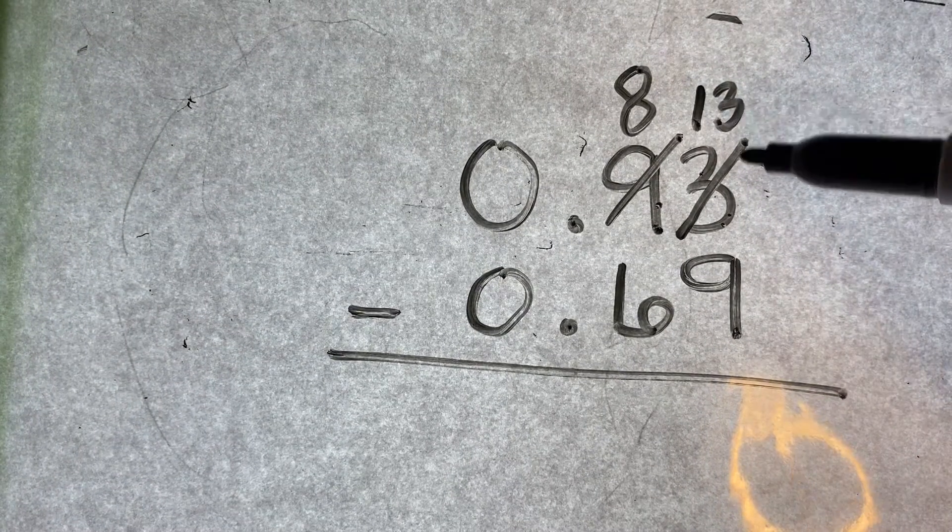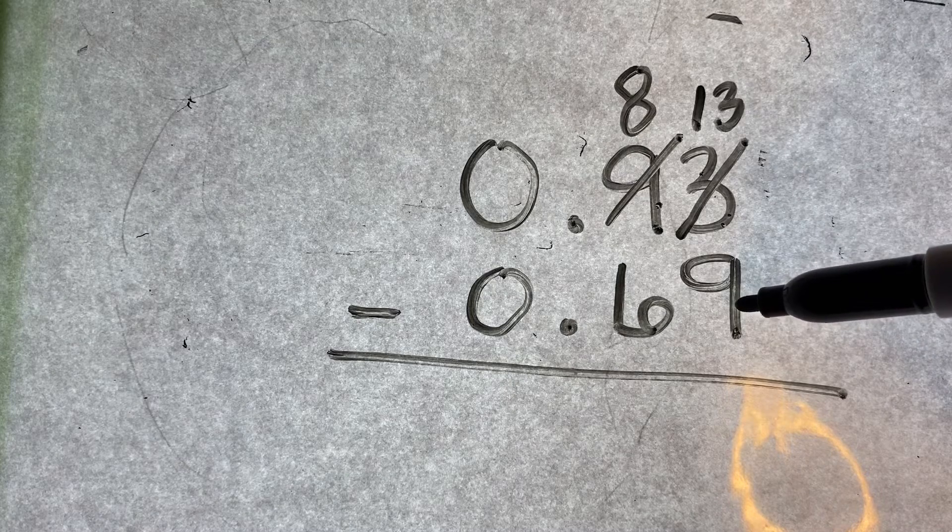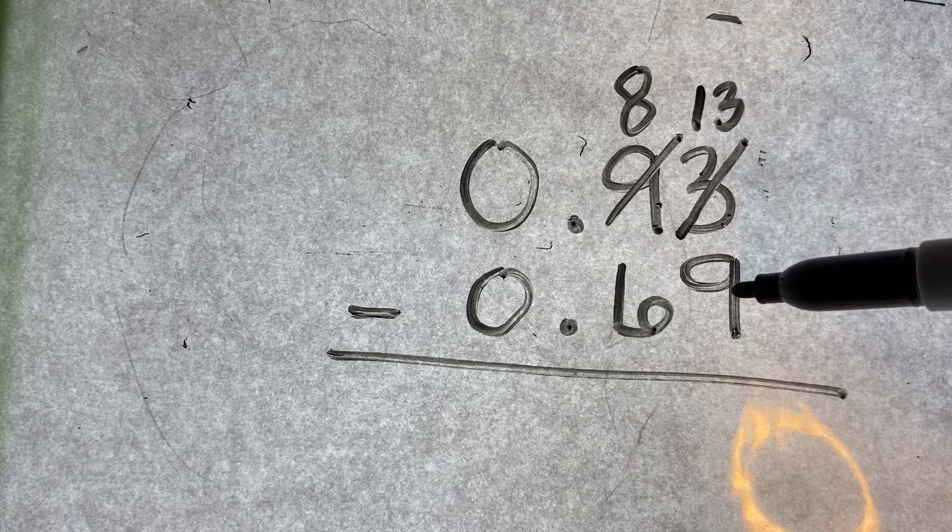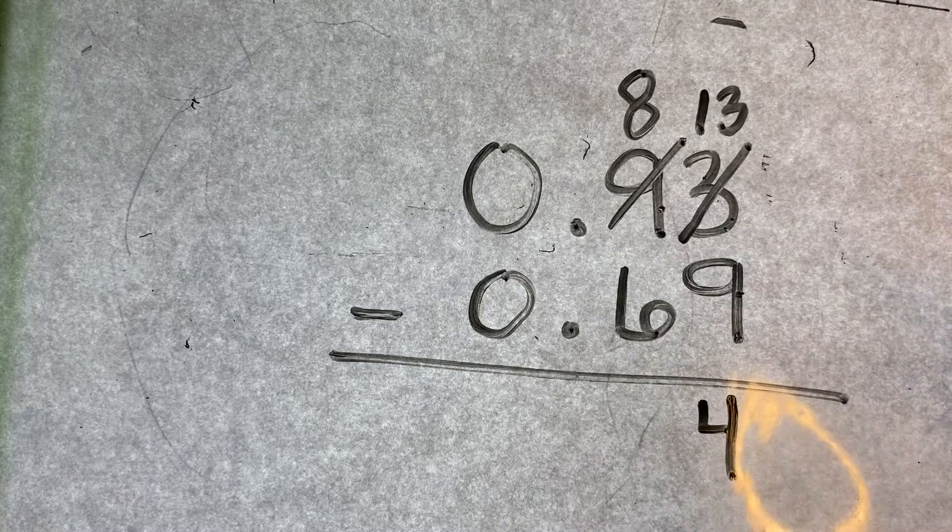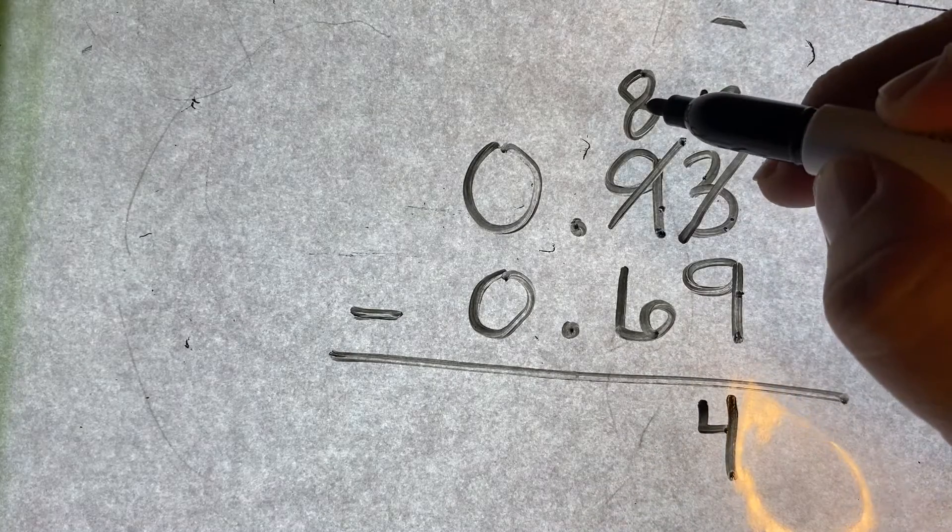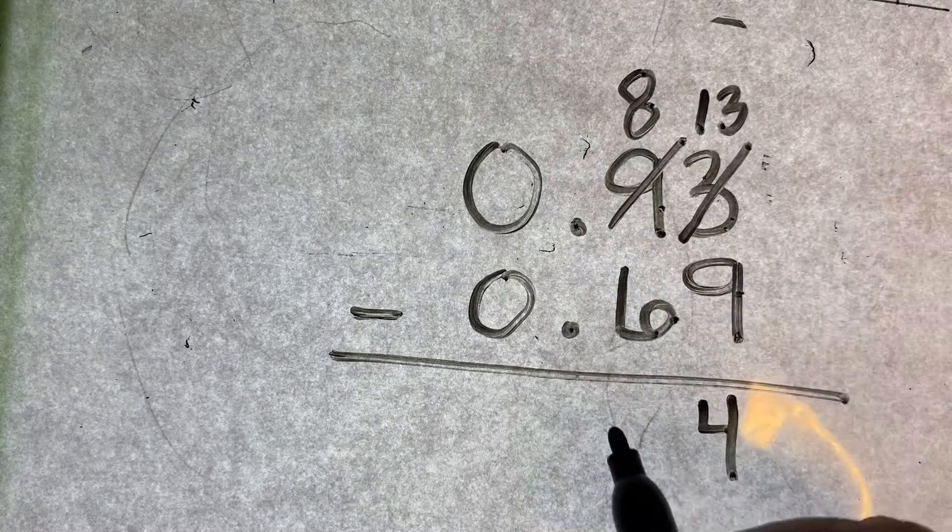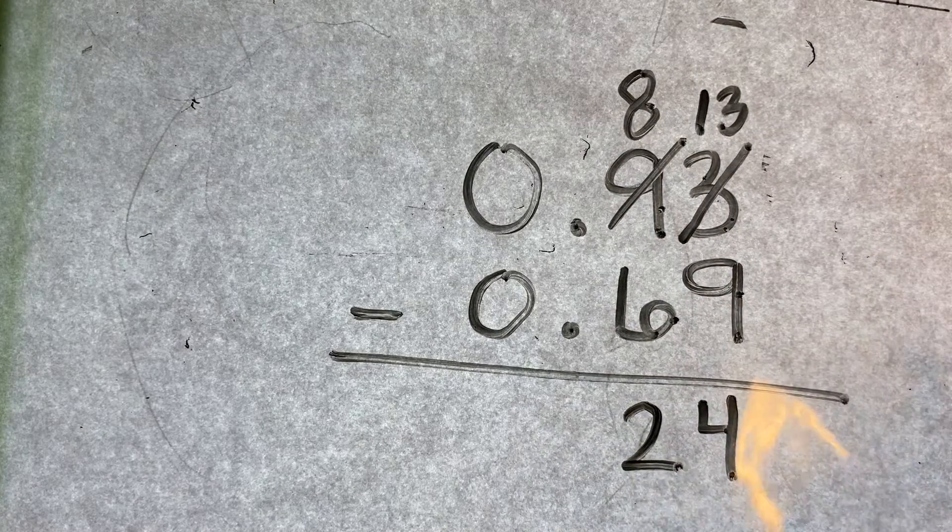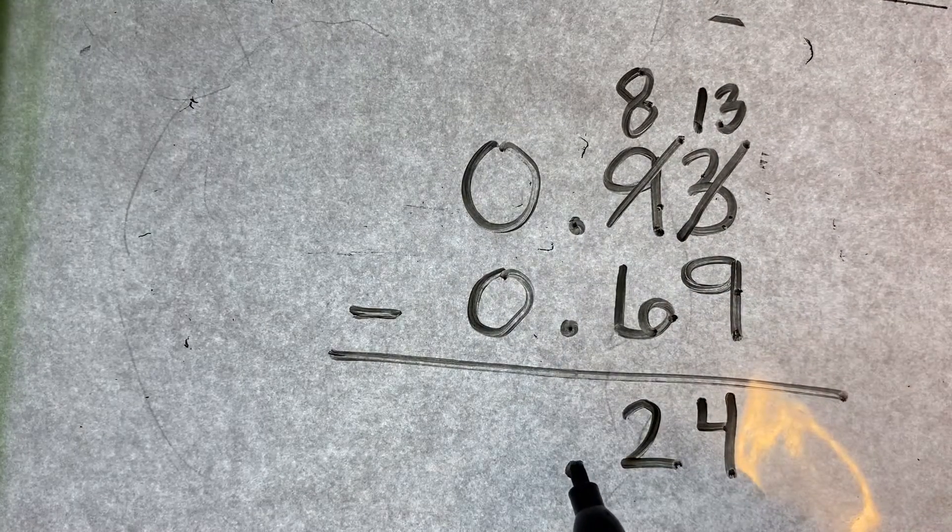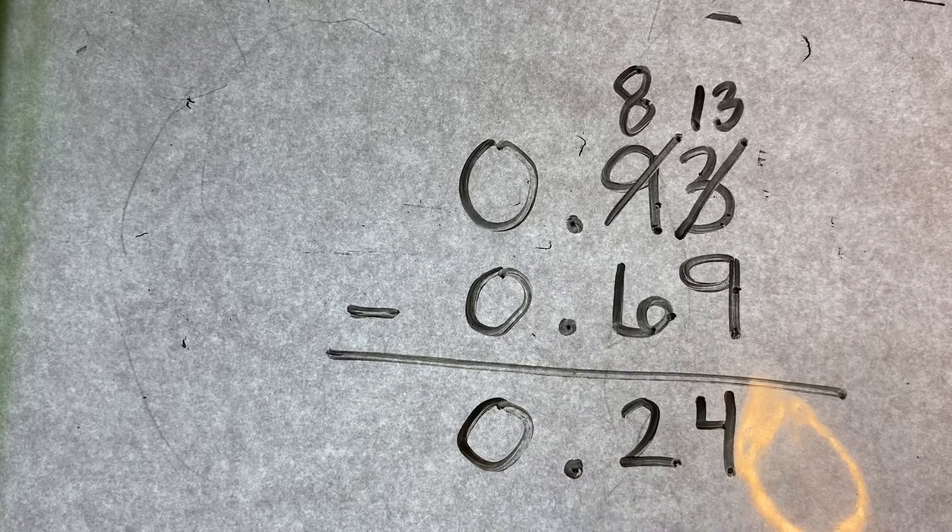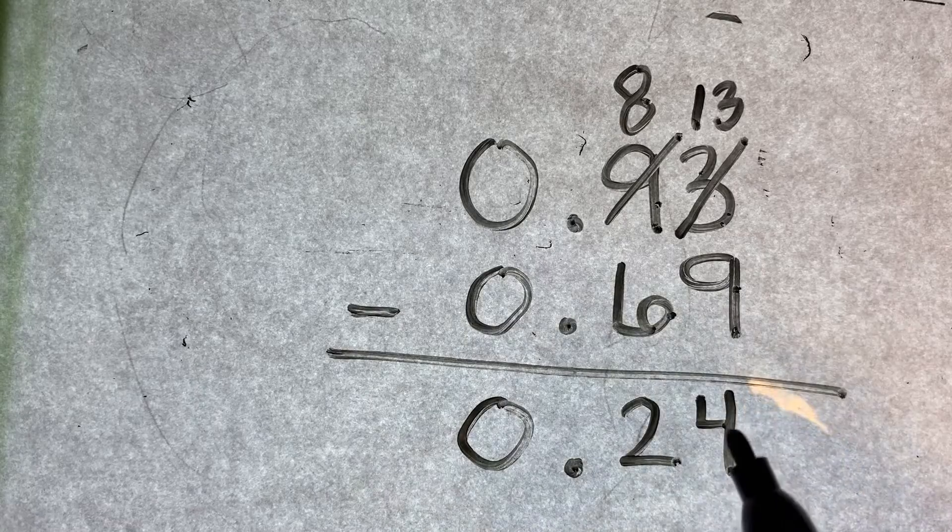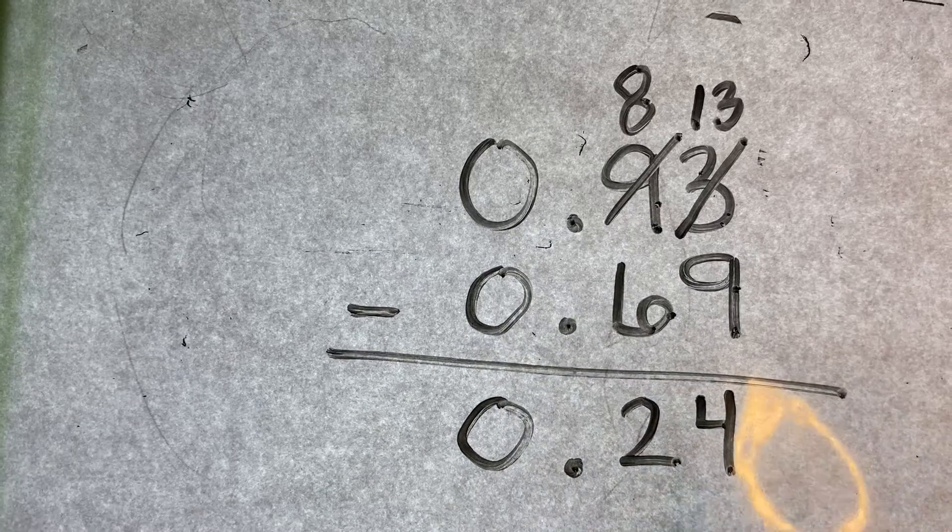So I just cross it off and make a thirteen. Now I've got thirteen, and I'm taking nine away. So thirteen minus nine, I have four left. Eight minus six, I have two left. Bring down my decimal. I have a zero. My answer is I have twenty-four hundredths left from that subtraction.